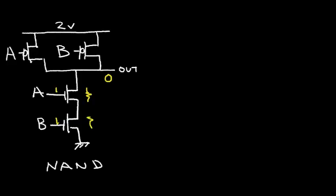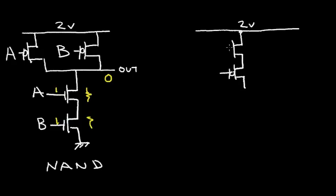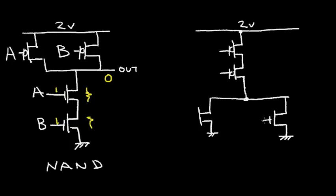Now let's construct the CMOS NOR gate. Again, let's say the power supply is 2 volts. We'll connect our PMOS transistors in series. And let's connect our NMOS or N-channel transistors in parallel. We call this input A and input B, connecting input A to the gate of one NFET and input B to the gate of the other NFET. This is labeled our output node.